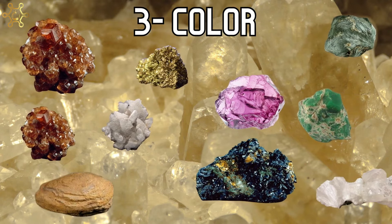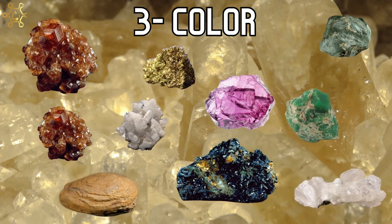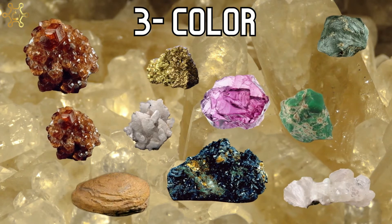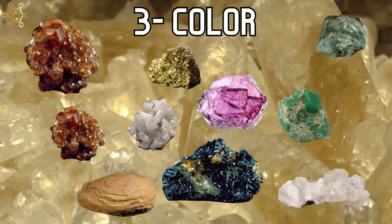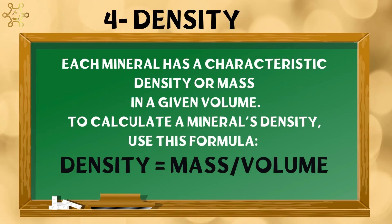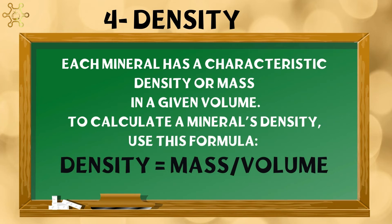Number 3: Color. Minerals come in many colors, but only a few minerals have their own characteristic color. Number 4: Density. Each mineral has a characteristic density, or mass in a given volume. To calculate a mineral's density, use this formula: density equals mass divided by volume.